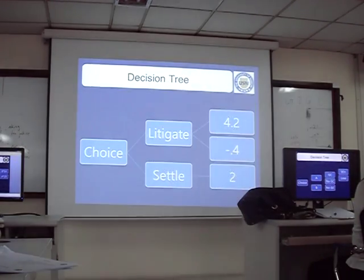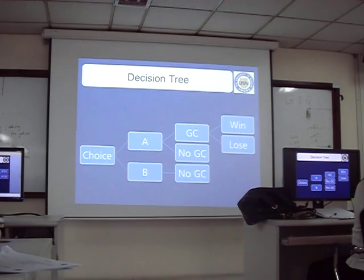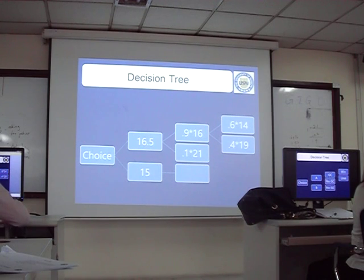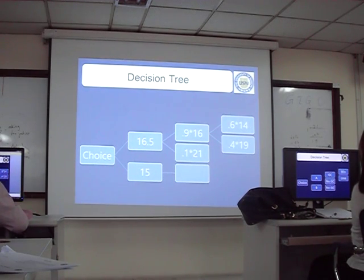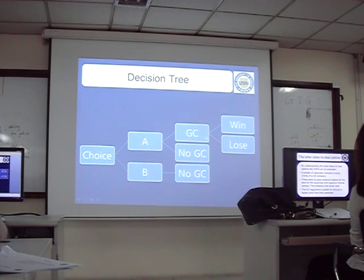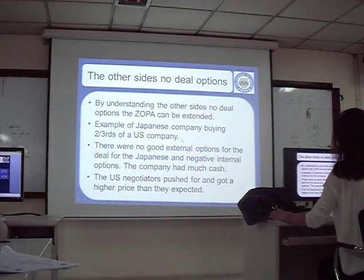Decision trees are especially useful when your BATNA involves a court case — what's the percent chance of winning, what's the percent chance of losing? Now let's move on to number two in our discussion about preparing before the negotiation: make the other side see you as able to walk away. Also, we should finish discussing the other side's no deal option and how understanding it can extend or enlarge the ZOPA.